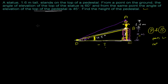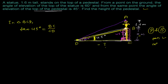In triangle BCD, applying tan 45 degrees equals BC over CD, which is x over CD. Tan 45 is 1, BC is x, and CD we don't know. So I get CD equals x meters. So I got this whole base distance in the form of x.